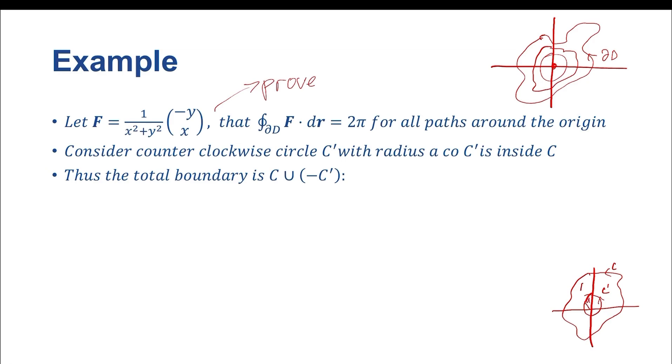What we would want to consider now is the total boundary. The total boundary of this domain has a little hole in it, but that's okay. The total boundary of this domain here is going to be the union of C with negative C'.